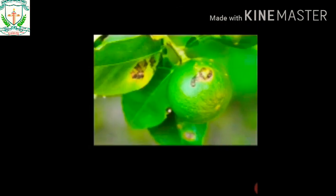Citrus canker is caused by bacteria and affects citrus family fruits like lemon and orange. You can also see the rusting of wheat, caused by the fungi — a microorganism — with its mode of transmission through air and seeds.